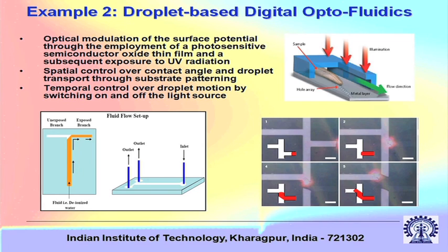Once that happens, a surface which was originally hydrophobic may become hydrophilic. So when water comes to the junction and we want to move it to the right, we shine UV light on that side — it becomes hydrophilic and water moves in that direction. If we want to stop that, we switch off the light. If we want to move the water to the left, we shine UV light on the left part of the channel.